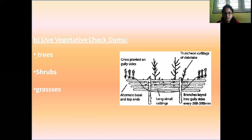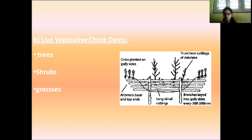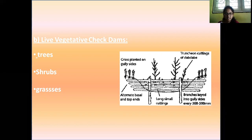The next type is live vegetated check dams. This is where trees, shrubs and grasses are placed across the channels. Live vegetated check dams are constructed using vegetation such as trees, shrubs and grasses across the channel to retain the runoff and silt.